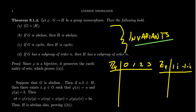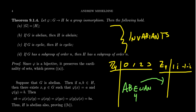An invariant is something that doesn't change as you go from one group to the other. Both of these groups are abelian — that's something true when you go from one to the other. These are both groups of order four; that stays the same. They're both cyclic. They both have a unique subgroup of order two. Those are things that stay the same: invariants.